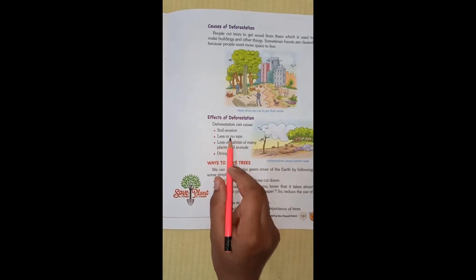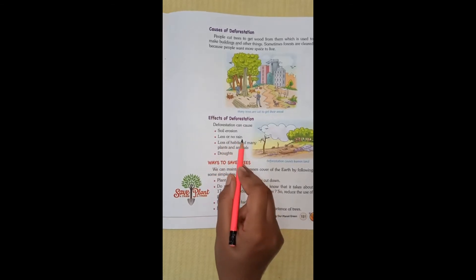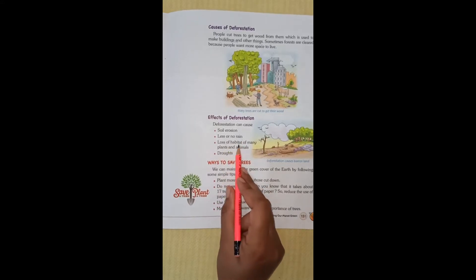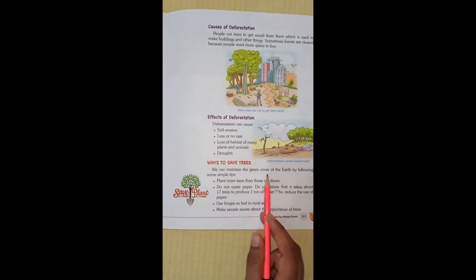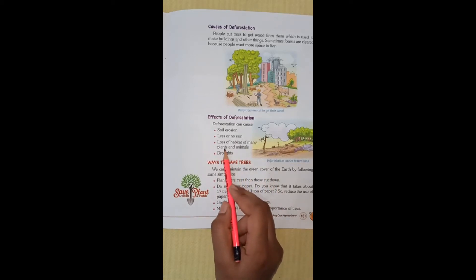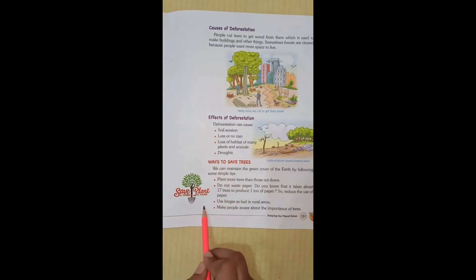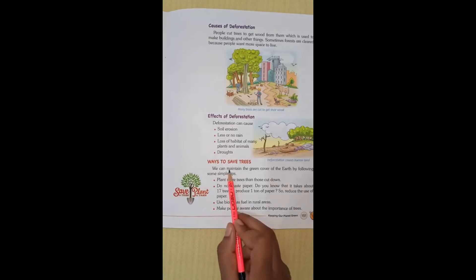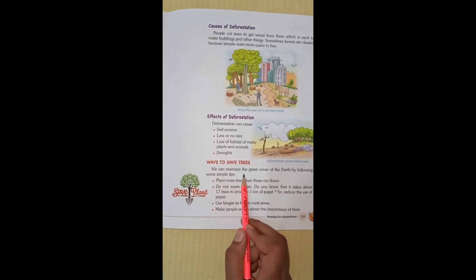Deforestation leads to the loss of habitat of many plants and animals. Many animals will be destroyed, many plants will be destroyed, and the land will become dry. Ways to save trees: We can maintain the green cover of the earth by following some simple tips.